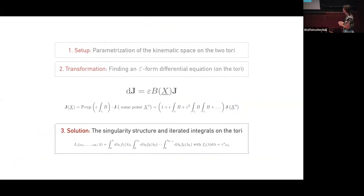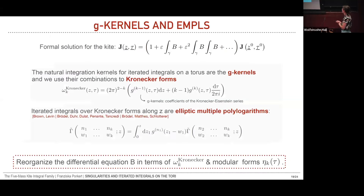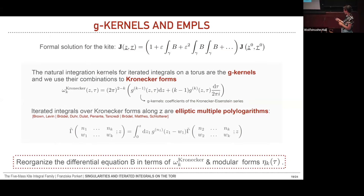With this last transformation we have found our epsilon form differential equation, which we can now solve in iterated integrals on the torii. To express the differential equation matrix B in a simpler form and obtain our result in known functions, we parametrize it on the torus and express it in the G kernels — the natural integration kernels on the torus. These are defined as coefficients of the Kronecker-Eisenstein series and combined into Kronecker forms, which transform as quasi-modular forms of weight k minus two and diverge when Li of Z vanishes — telling us something about singularities. Integrating these Kronecker forms along Z gives elliptic multiple polylogarithms.